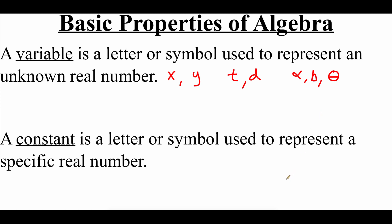A constant is a letter or symbol that's used to represent a specific number — so something like negative 4, or 1, or the square root of 2, or even pi. All of those symbols represent a very specific number that we're dealing with.